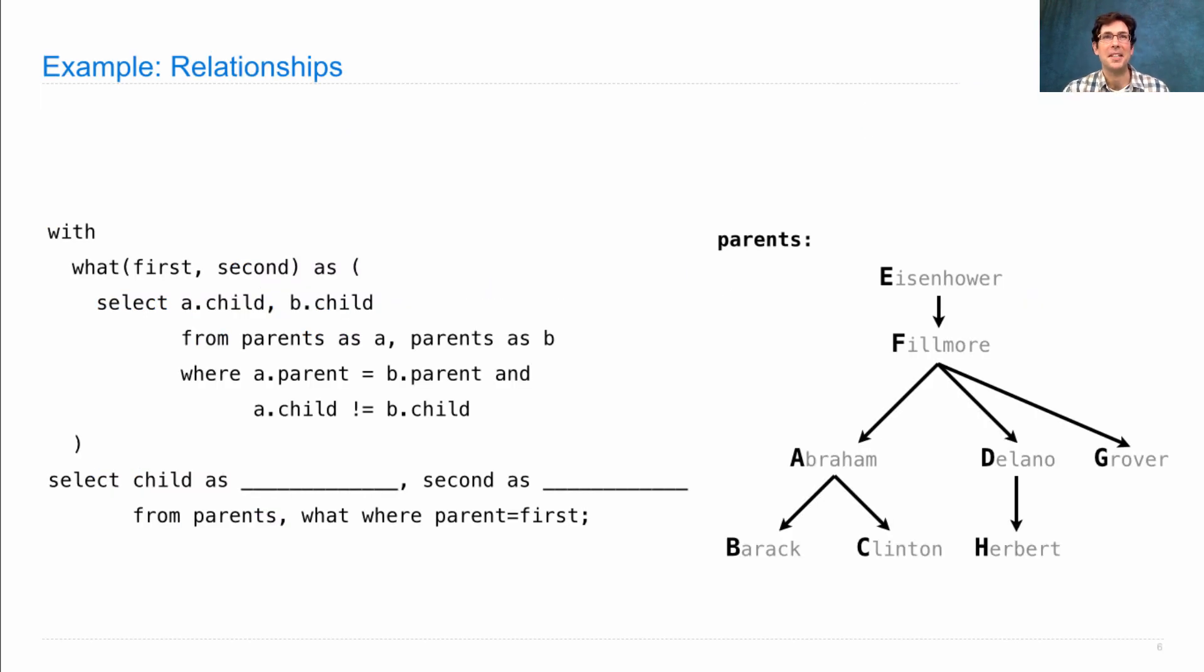Let's look at an example, an example of the interesting relationship drama among these dogs. Okay. So here's some sample query with a with clause that says, I need a local table called what, with the first and a second column that selects a.child, b.child from parents as a, parents as b, where a.parent equals b.parent and a.child does not equal b.child. Then select child as blank, second as blank, from parents joined with what, where parent equals first.